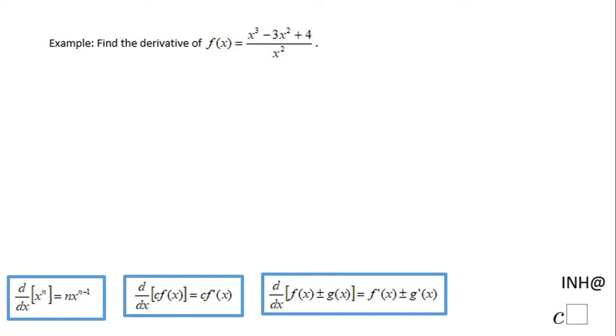Welcome back to Math Help at C squared. In this example, we need to find the derivative of the function f(x) = (x³ - 3x² + 4)/x².